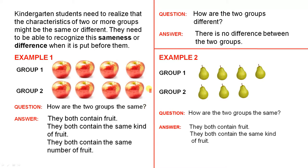So you have a discussion with students and see what they come up with. Hopefully in the end they'll come up with: they both contain fruit, they both contain the same kind of fruit, and they both contain the same number of fruit. So those are three very important things that are the same.